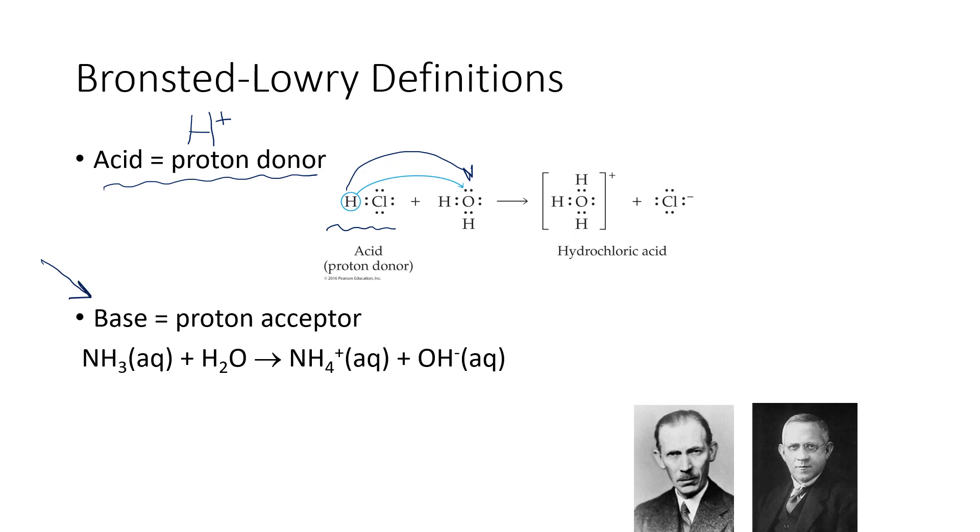Bases, according to Bronsted-Lowry, are defined as proton acceptors. And so for instance, ammonia acts as a Bronsted-Lowry base because it will accept a proton from water and make this NH4+ ion, the ammonium ion, and release hydroxide ions. So we still end up sneaking hydroxide ions in this particular equation for a base. But the hydroxide is not actually coming from the ammonia. The hydroxide started in that water molecule.